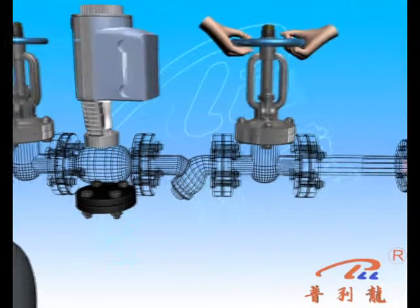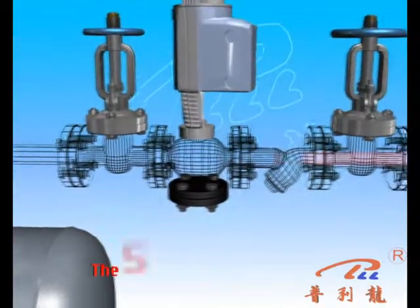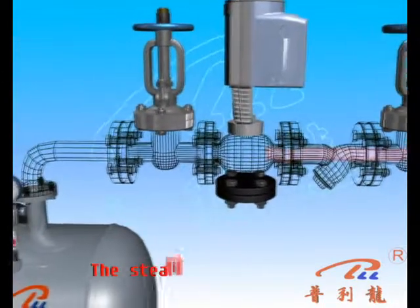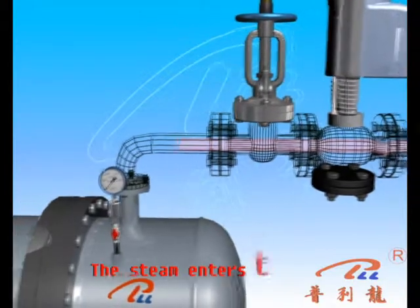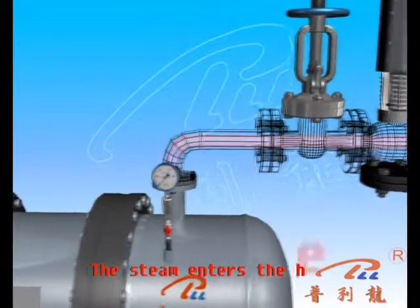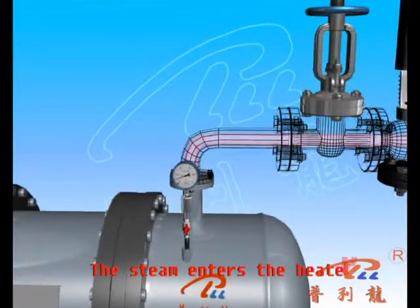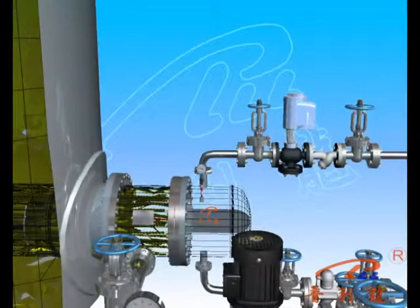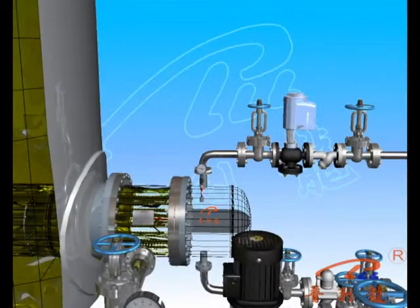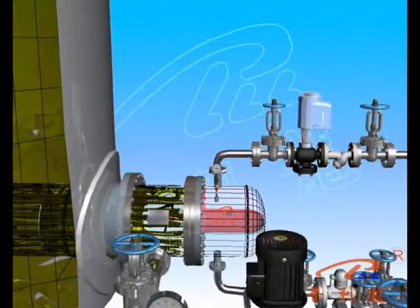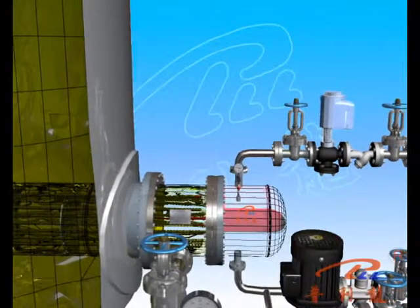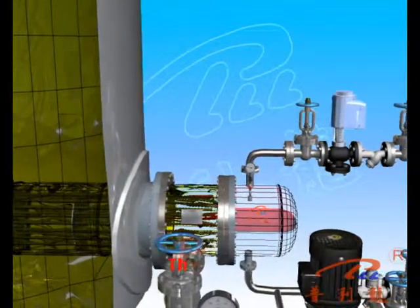Slowly open the steam valve, having the steam flow through the channel box and heat exchange tube from the filter and temperature control valve. The fluid forms a tubular flow on the inner and outer surface, creating a strong vibration and swirling effect.